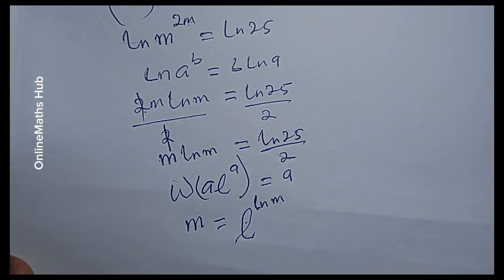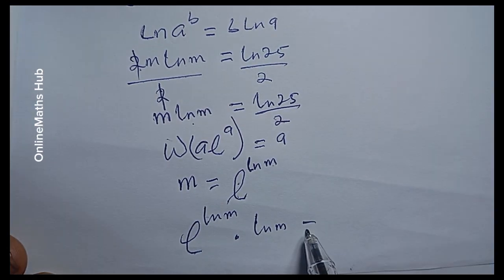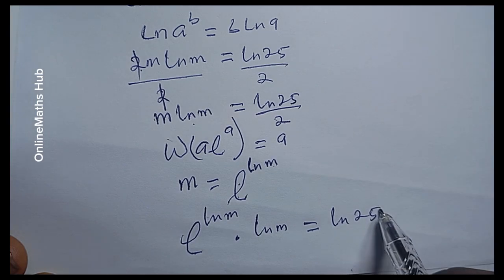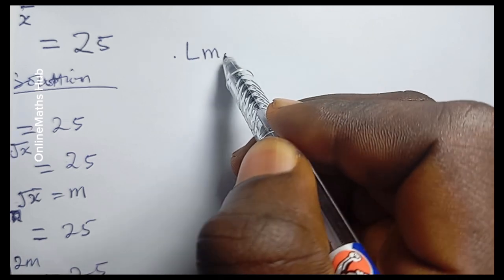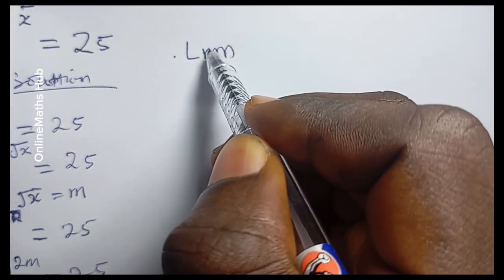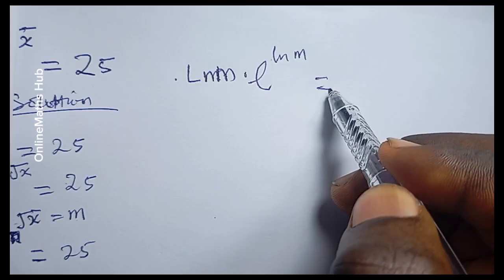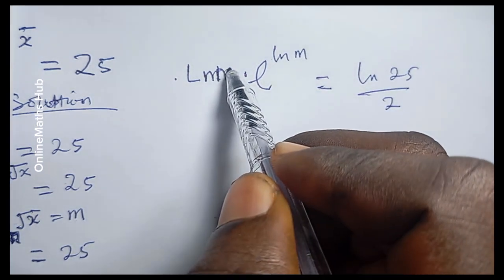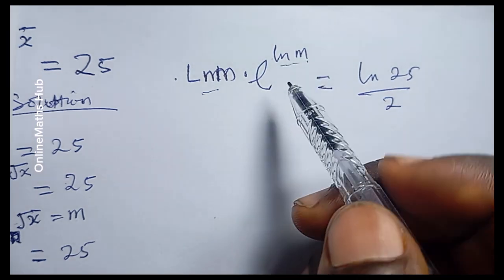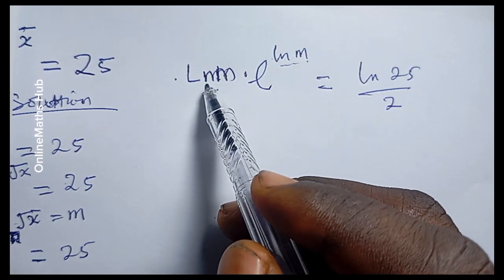Writing this out, I'm going to have e to the natural log of m, multiplied by the natural log of m right here, all equal to the natural log of 25 divided by 2. So I can write this as: natural log of m multiplied by e to the natural log of m, equal to the natural log of 25 divided by 2. You can see I have natural log of m here and also e to the natural log of m, which is in the form a times e to the a.